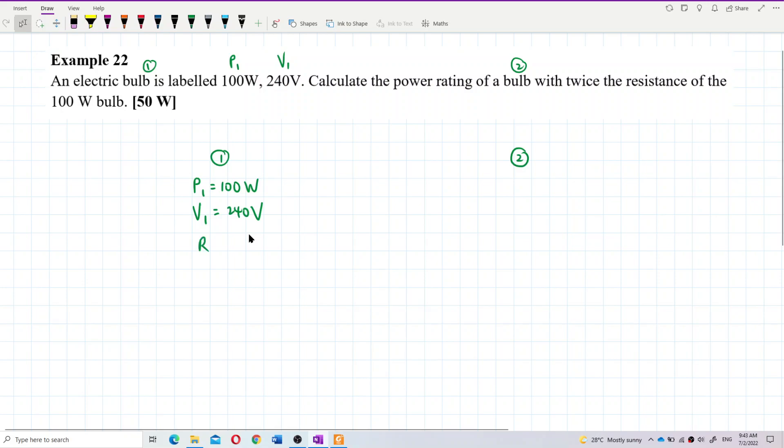So we have resistance 1 but we don't know how much is resistance 1. But we know the resistance for bulb 2 is twice the resistance of bulb 1, R2 = 2R1. So we need to find the power rating of the second bulb, which is P2.